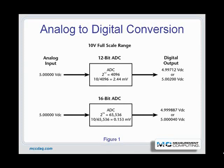Voltage-to-frequency converters inherently have a high noise rejection characteristic because the input signal is effectively integrated over the counting interval. This conversion method is commonly used for slow and noisy signals, and is widely used for remote sensing in noisy environments. The input voltage is converted to a frequency at the remote location and the digital pulse train is transmitted over a pair of wires to the counter, eliminating noise that can be introduced in analog transmission lines over relatively long distances.